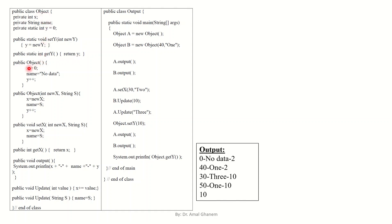We have a public Object() with empty brackets — because this method has exactly the same name as the class, this is a default constructor with no parameters. It initializes x to zero, name to "no data", and increments y. We have another constructor with parameters that takes newX and String s, saves them in x and name, and also increments the static variable y.